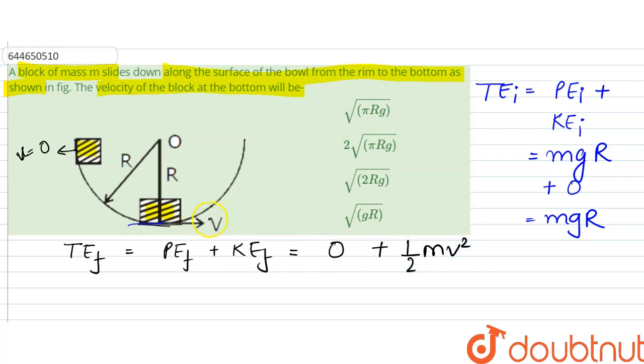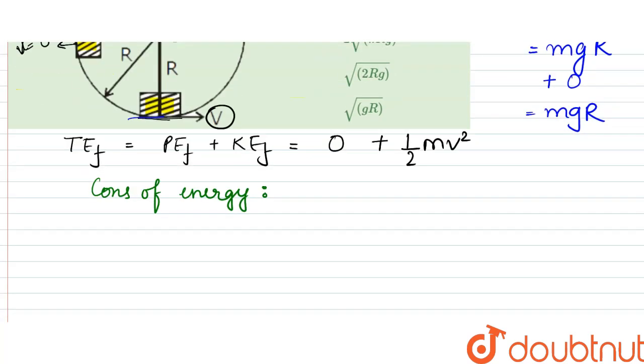Since we are considering v is the velocity, using conservation of energy, total energy initially would be equal to total energy finally. Therefore,